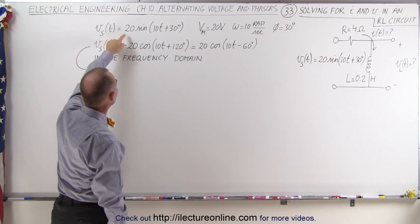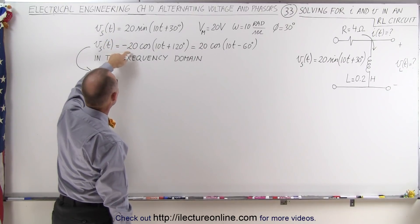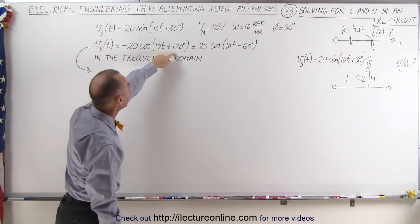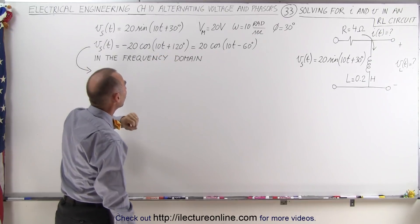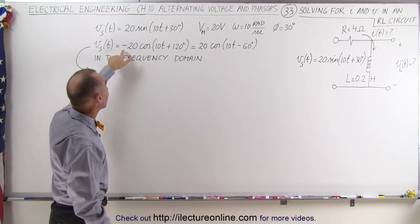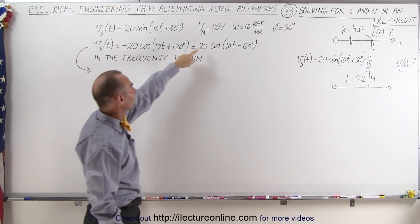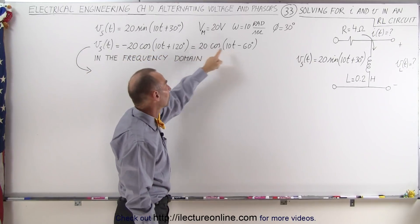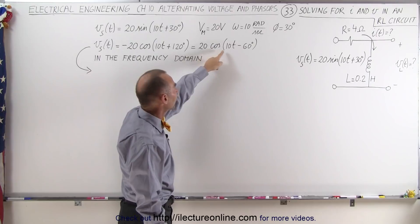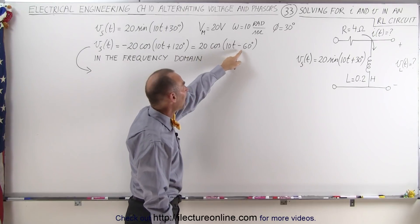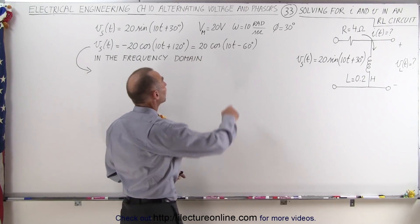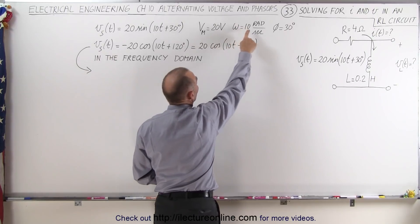When we go from the sine to the cosine, what we do is change the sine and add 90 degrees, or we subtract 180 degrees and then get rid of the negative sign — which is exactly what we did here. So the source voltage can now be expressed as 20 times the cosine of 10t minus 60 degrees. The maximum voltage is still 20 volts.